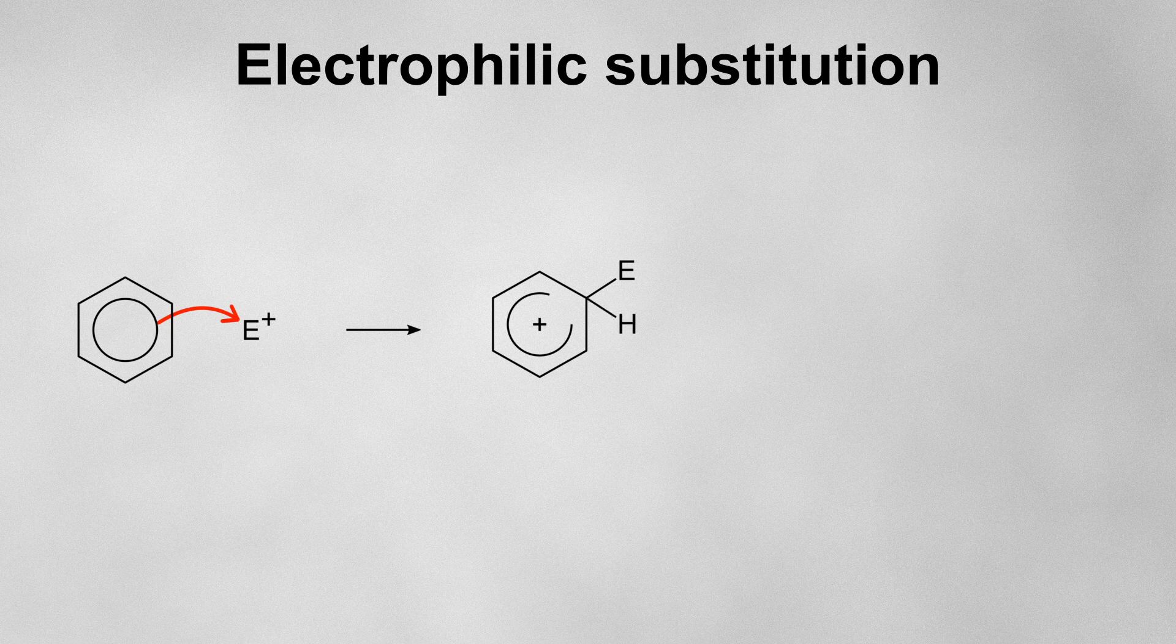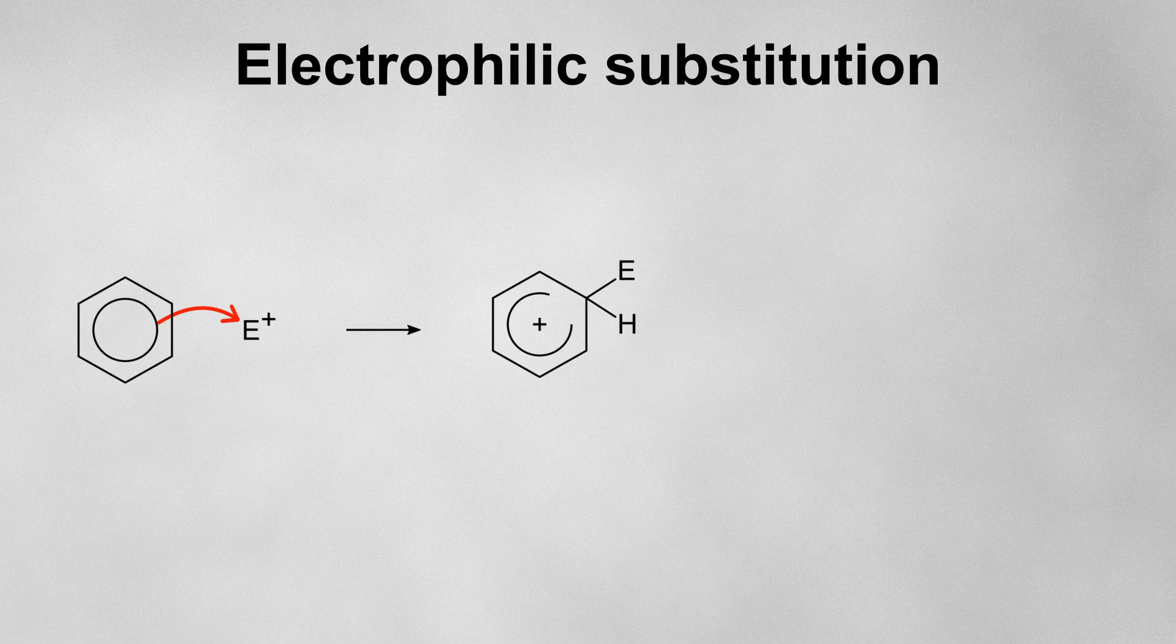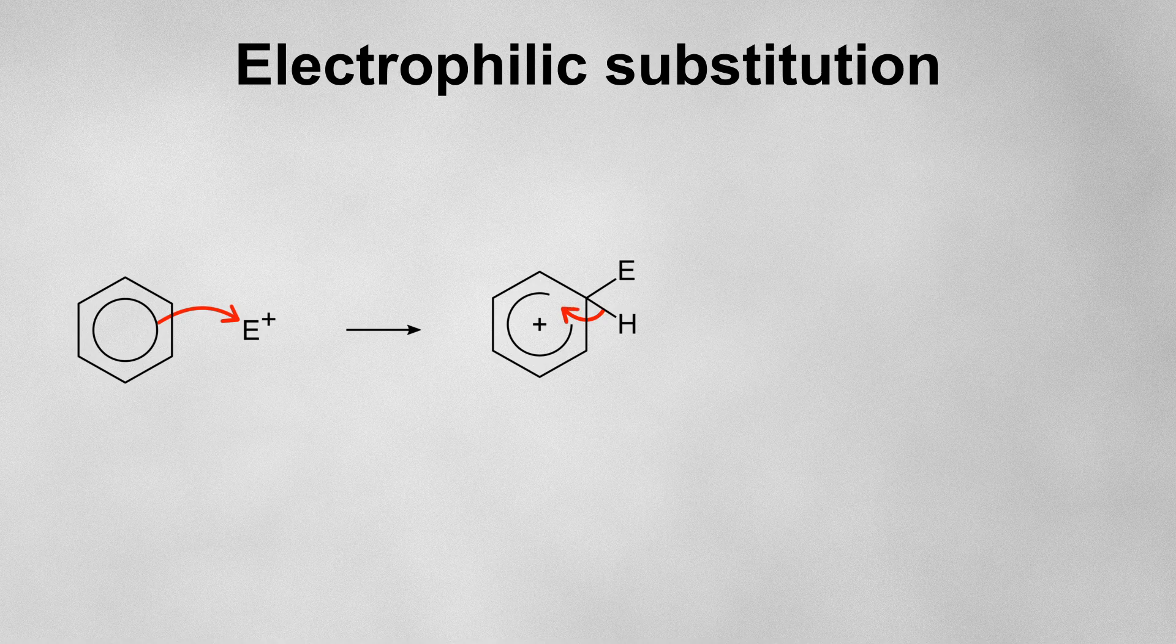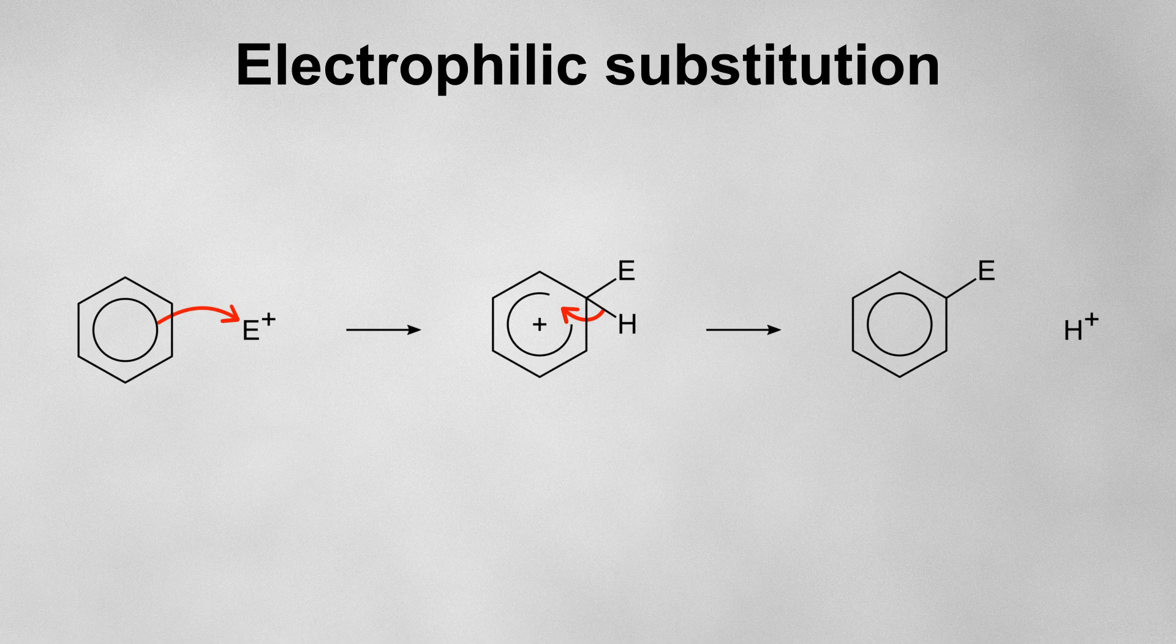The benzene ring wants to reform its delocalised pi system as this would be a lot more stable. It does this by losing the hydrogen that's attached to this carbon. The electrons from the bond go back into the ring and we're left with a regular benzene with the electrophile attached. The overall effect of this reaction is a substitution as a hydrogen has swapped for an electrophile.